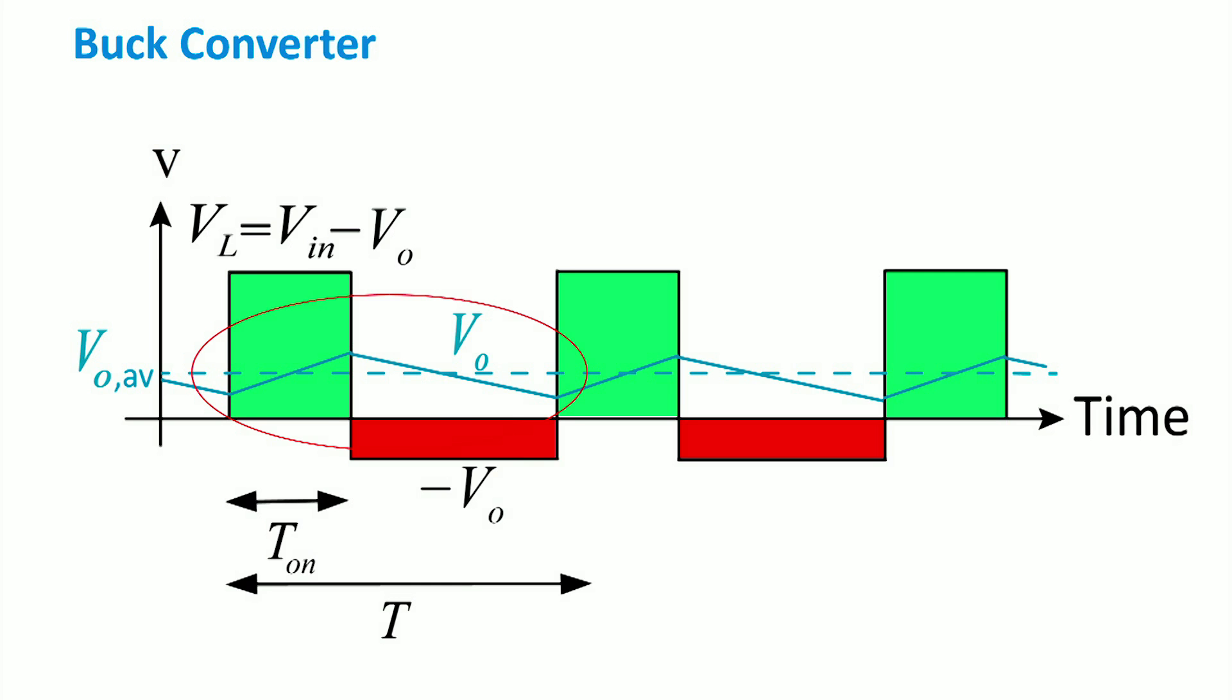This means that the green area during on period is equal to the red area during the off time, and as a result the voltage of the inductor at the beginning and at the end of each cycle will remain the same.